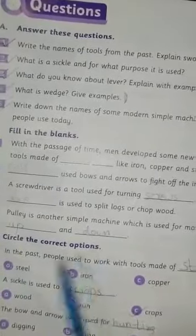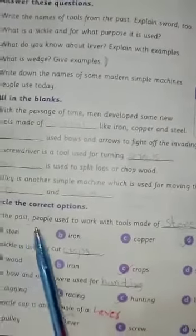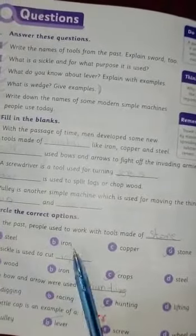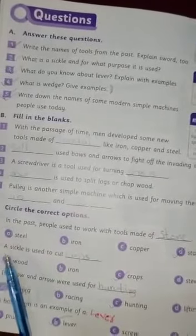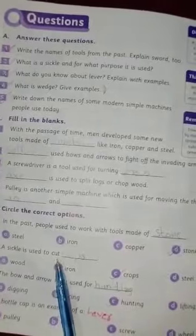C portion dekhiye. Circle the correct option. Number one: in the past, people used to work with tools made of - steel, iron, copper, stone. Stone aega. Number two: a sickle is used to cut - wood, iron, crops, steel.